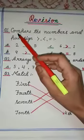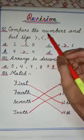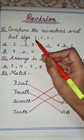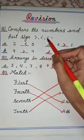Here we have question 1 which is compare the numbers and put sign greater than, smaller than and equal to.